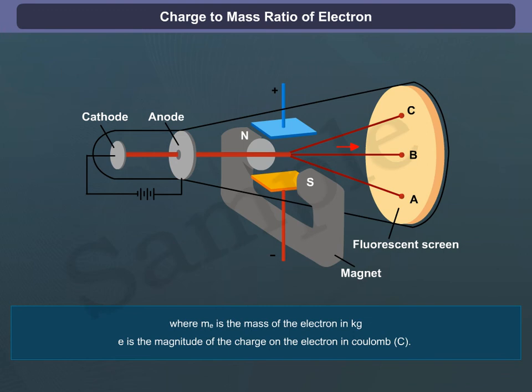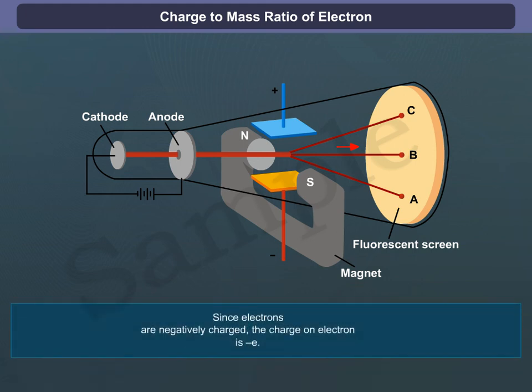Where Me is the mass of the electron in kilograms, and E is the magnitude of the charge on the electron in coulombs. Since electrons are negatively charged, the charge on the electron is -E.